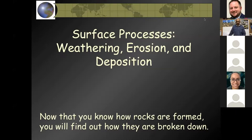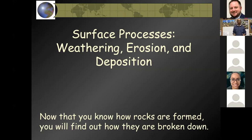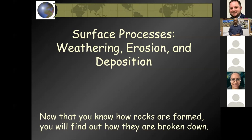Surface processes. Weathering occurs on the surface or close to the surface. You also see other earth processes like erosion and deposition — those are agents you'll probably learn more about later this school year. Hopefully you know how rocks are formed, and through this presentation you'll find out how they are broken down.